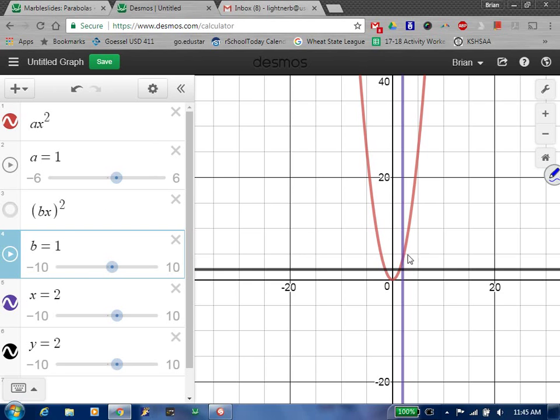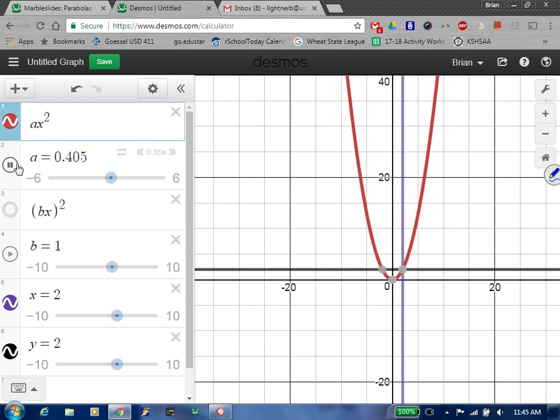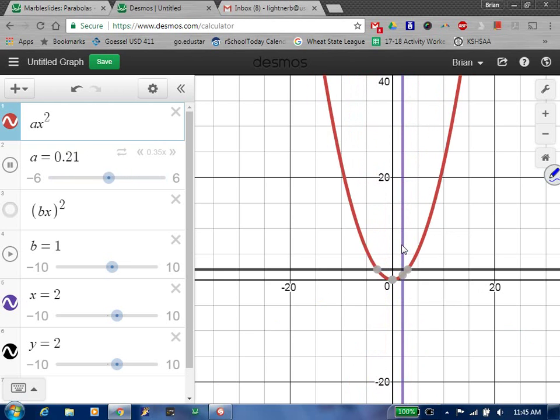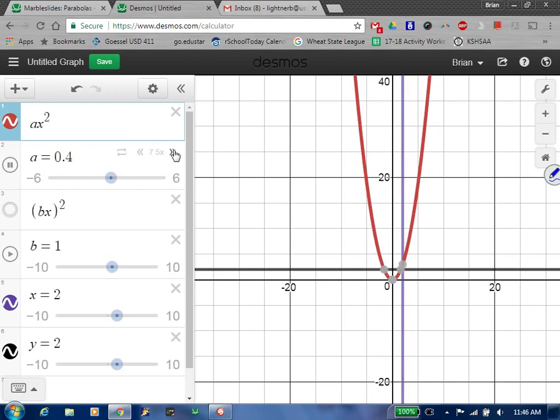So if you watch this point here, when I turn this on I'm going to change this a so it's increasing and decreasing. Watch that point. Where's it going? Is it changing vertically or horizontally? So this is what we're saying. This is the basic point and it's getting stretched vertically. So that point is going higher and higher, and then when it starts changing it starts coming down. Now it's getting compressed vertically.